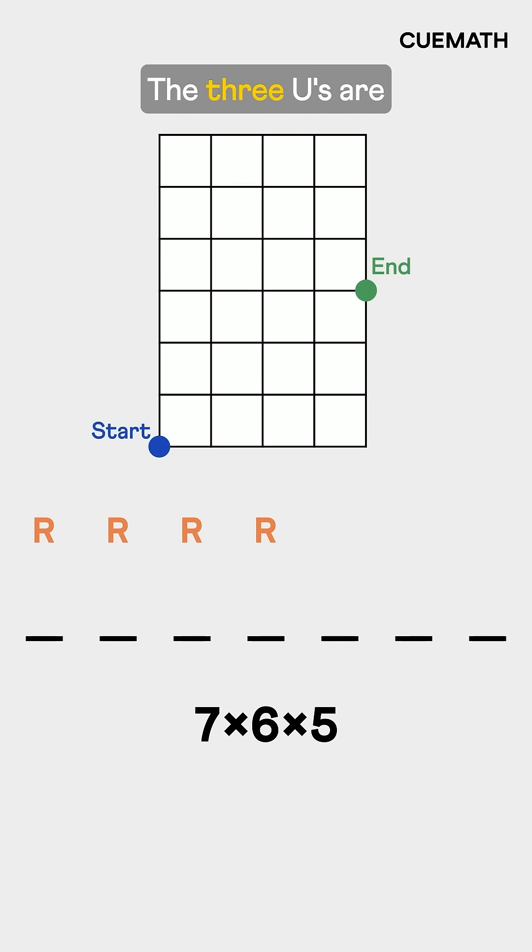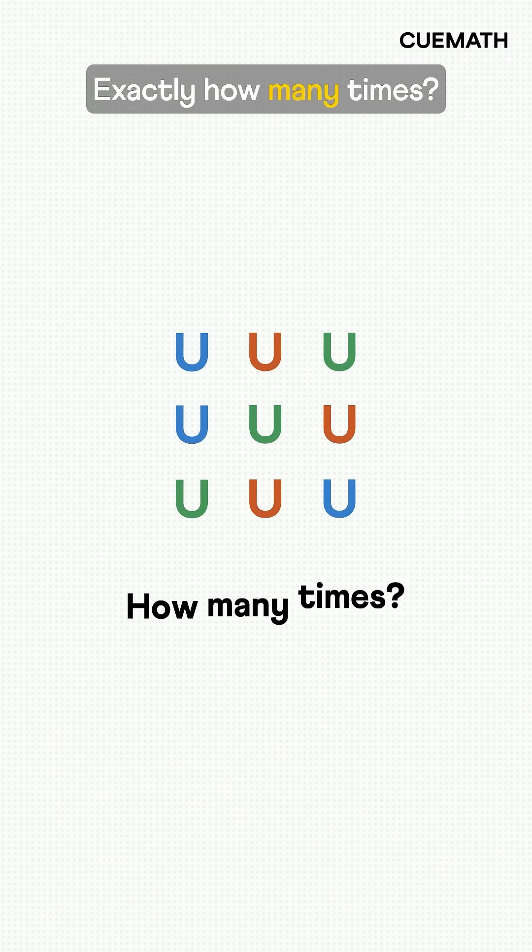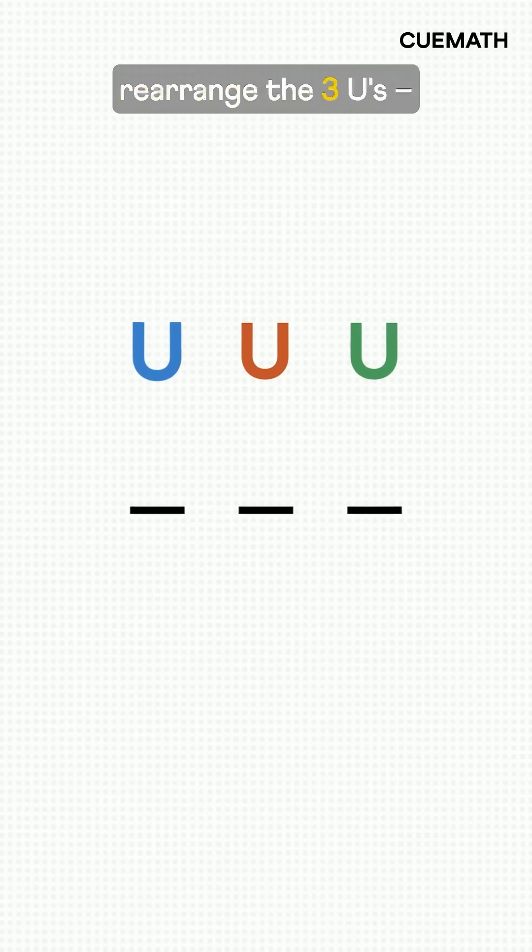But wait, the three U's are also the same, but we've treated them as if they were different. So we counted these same arrangements more than once. Exactly how many times? That's the number of ways to rearrange the three U's.